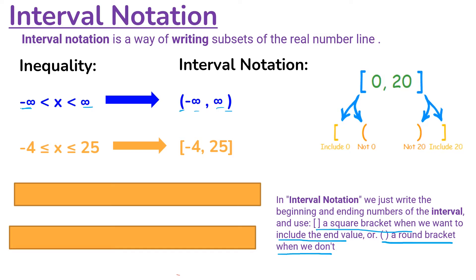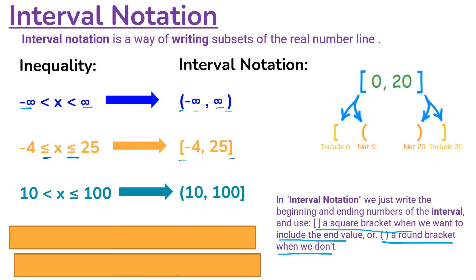The second example says X is greater than or equal to negative 4 but less than or equal to 25. Since we have the equal-to signs underneath both, we use square brackets because we are including negative 4 and 25.